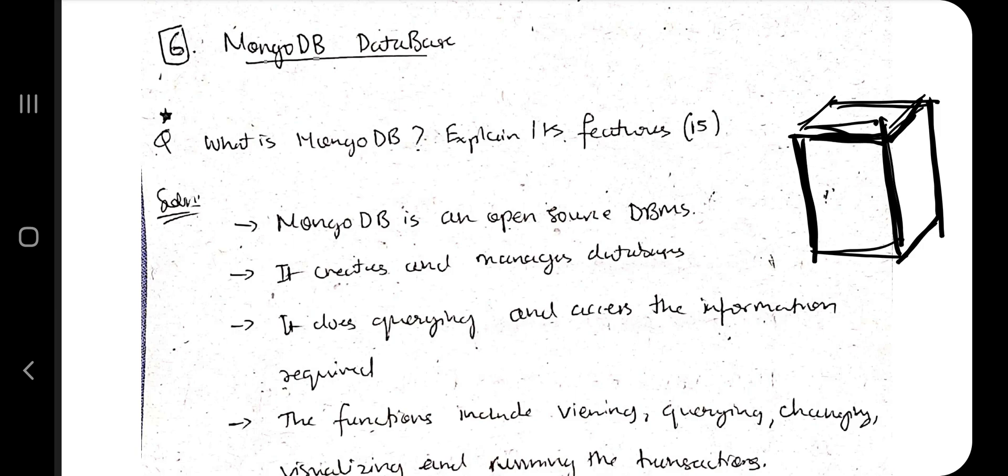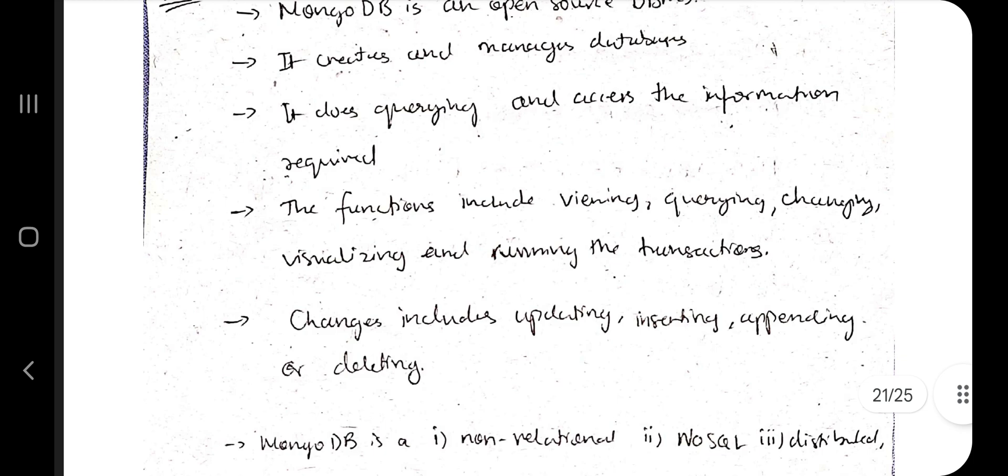Just put that picture in your mind, you can easily get eight marks. So what is MongoDB? It is an open source DBMS, it creates and manages databases. It stores, queries, and accesses the information, and the functions include viewing, querying - you can write it all in your own words.